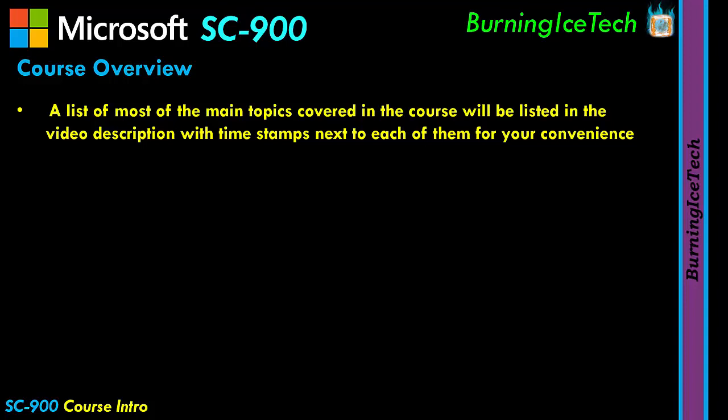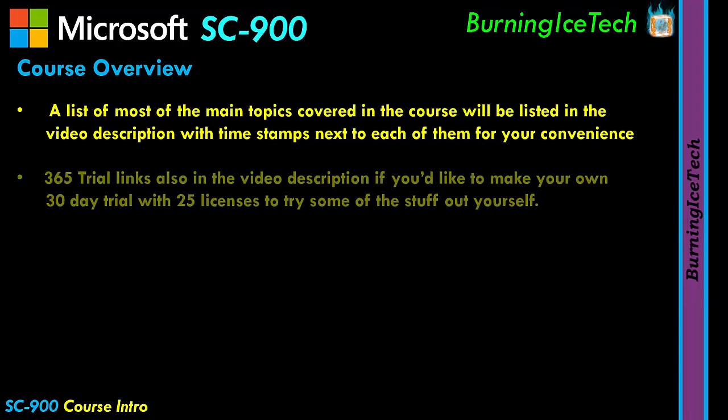Speaking of the video description, what you'll also find there is not just a list of all the topics with timestamps — you'll also find two links to Microsoft 365 trials, in case anyone would like to try some of the stuff in the course out for themselves. You can use either of those two links; they will both give you a trial. One will give you 25 Enterprise E3 licenses, and the other will give you 25 Enterprise E5 licenses. I'll add little descriptions above each link, but I would suggest using the Enterprise E5 one since those licenses normally have more functionality — you're going to get a lot more joy out of that one.